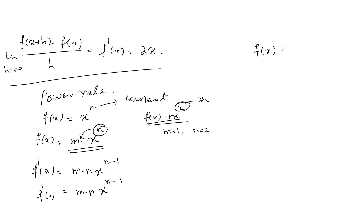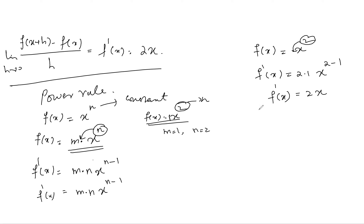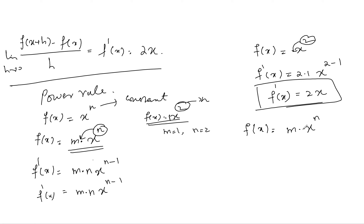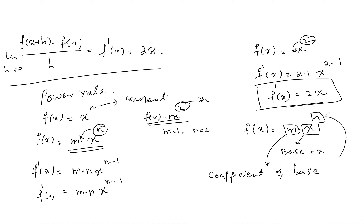Compare with the four-step method — it's a long process — but applying the power rule to x² is just two steps: multiply power 2 with coefficient 1, subtract 1 from the power, giving 2x. In the general form f(x) = m·x^n, we identify the base (which is x), the coefficient of base (m), and the power (n).